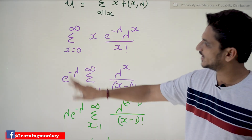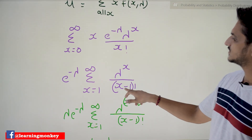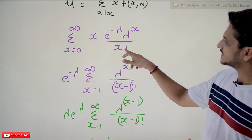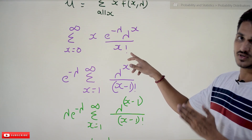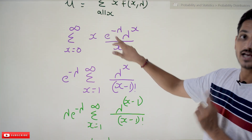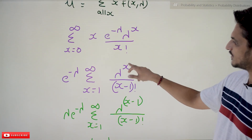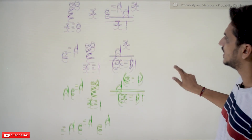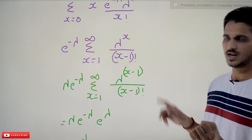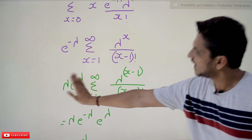Taking e^(−λ) out: e^(−λ) · Σ (x=1 to ∞) λ^x / (x−1)!. We get (x−1)! because x! = x · (x−1) · (x−2) · … · 1, so x cancels with the x in the numerator, leaving (x−1)! in the denominator. Then, taking one factor of λ out from λ^x gives λ^(x−1), so outside we get λ · e^(−λ) · Σ (x=1 to ∞) λ^(x−1) / (x−1)!.